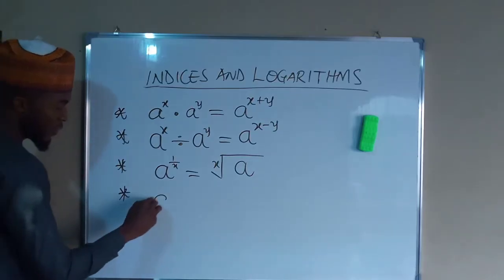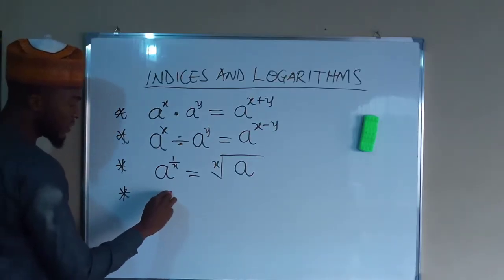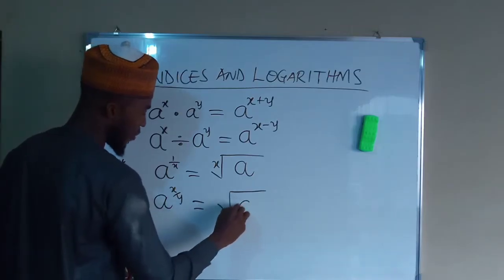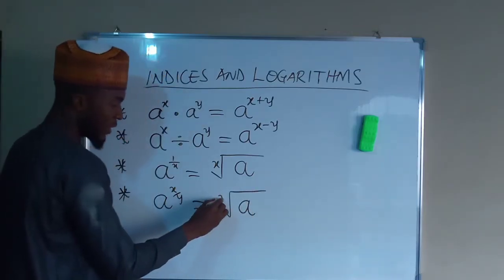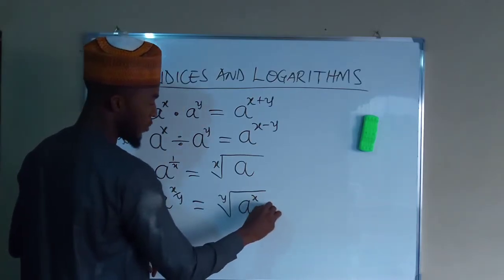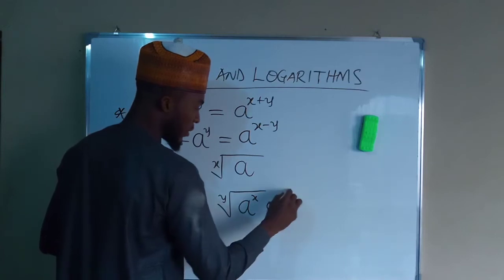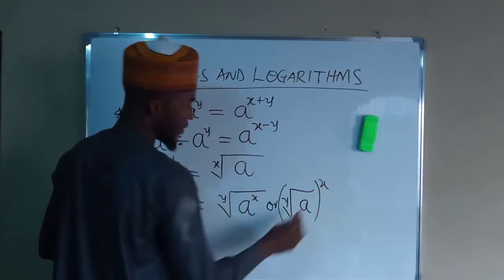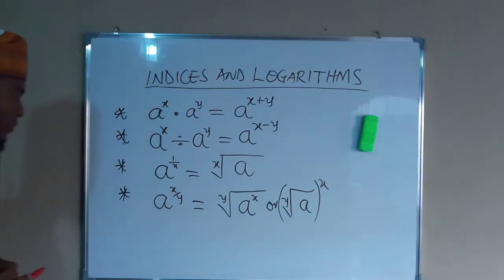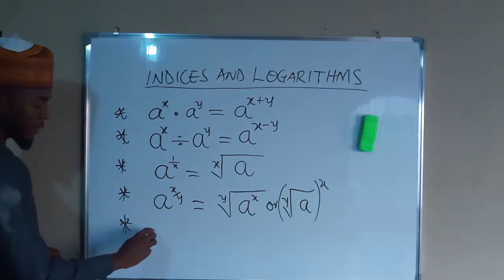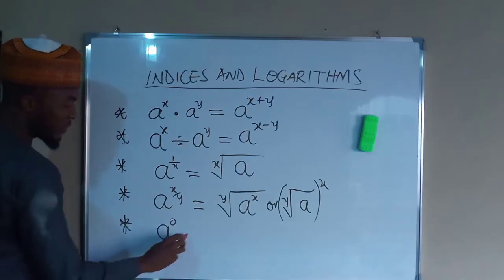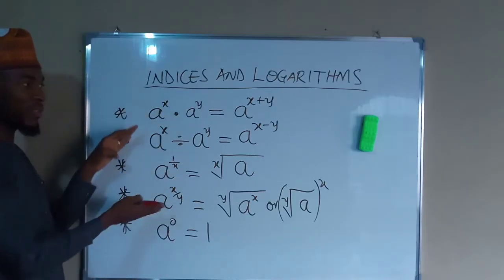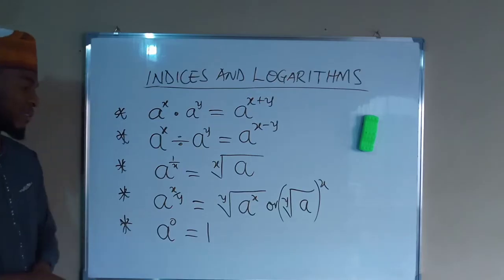Another law says: if you have A raised to the power of X divided by Y, this is the same thing as taking the root of A with an index of Y and a power of X, or taking the root of A raised to the power of X — both mean the same thing. We also have a law that says if you have A raised to the power of 0, this is equal to 1. But we need to prove this, as these other laws are simpler to understand.